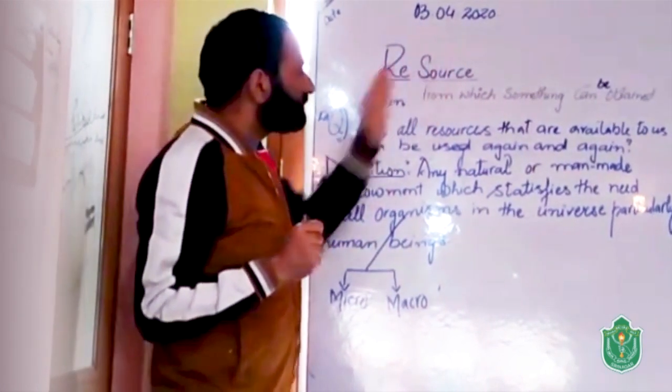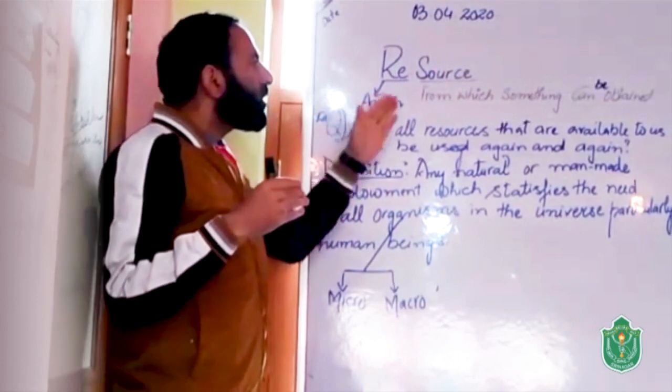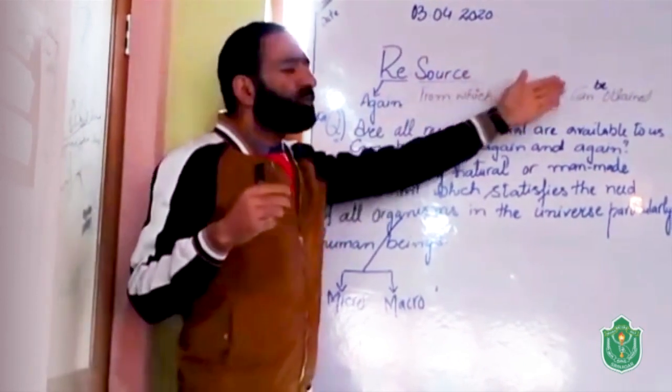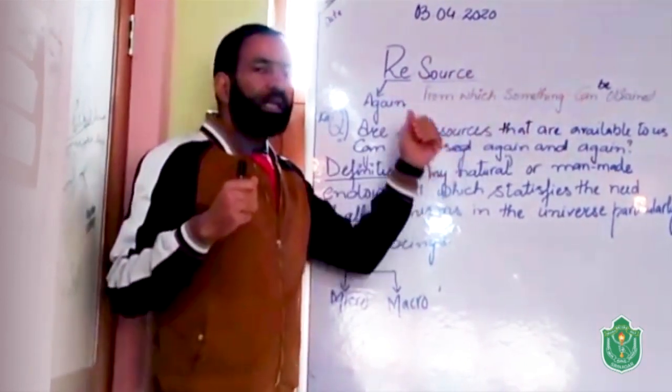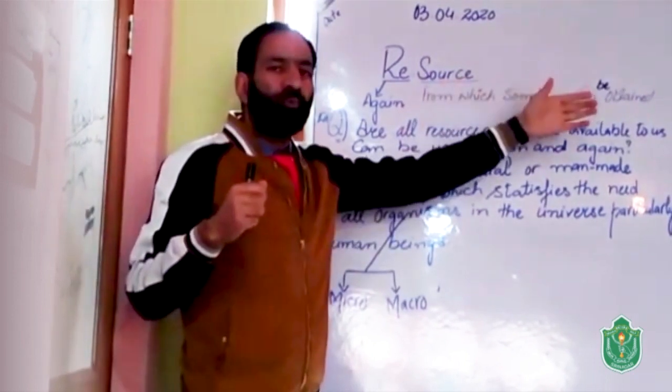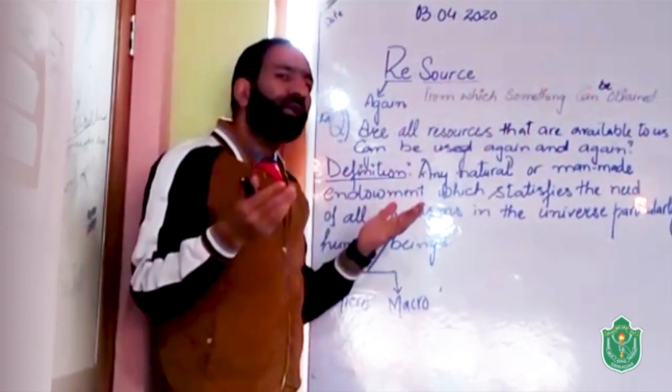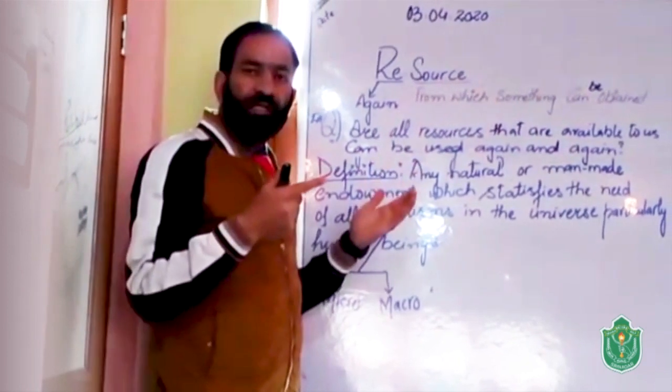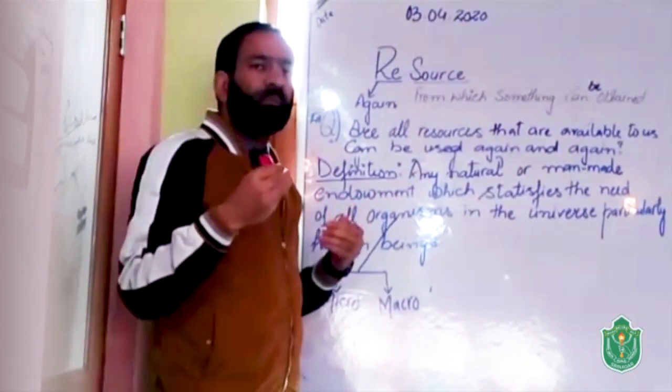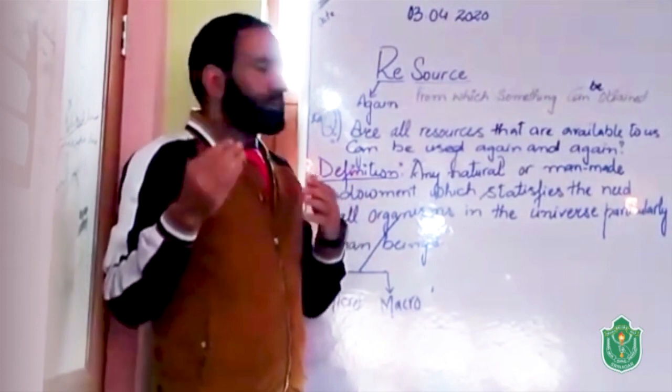Then the source - source from which something can be obtained. We obtain different things from different sources. It may be plants, it may be animals, it may be some natural forms.